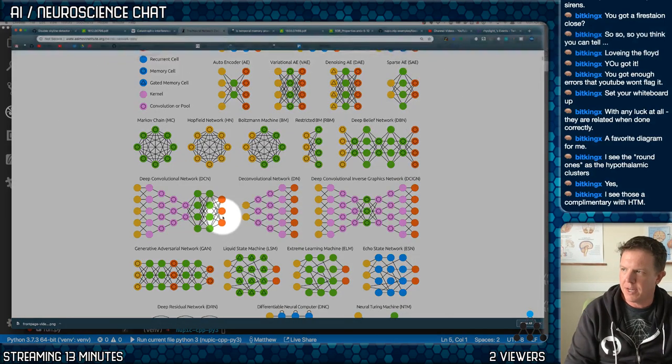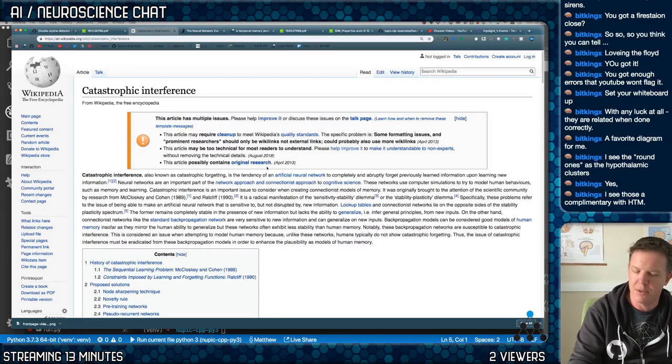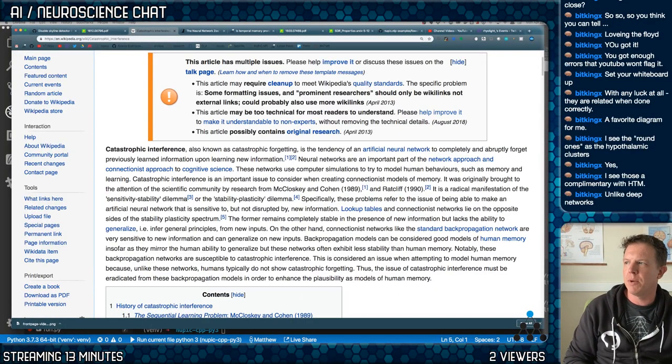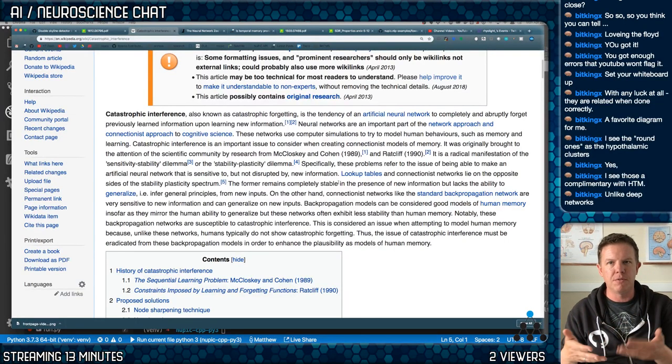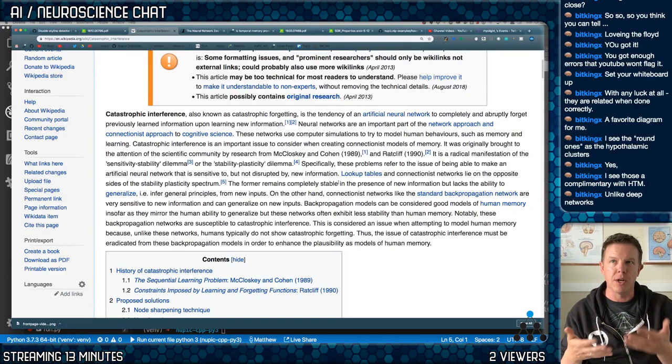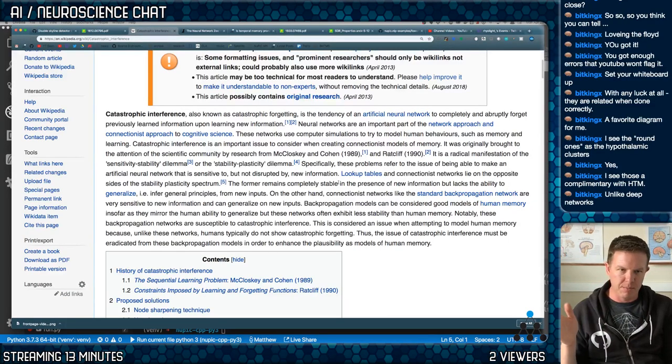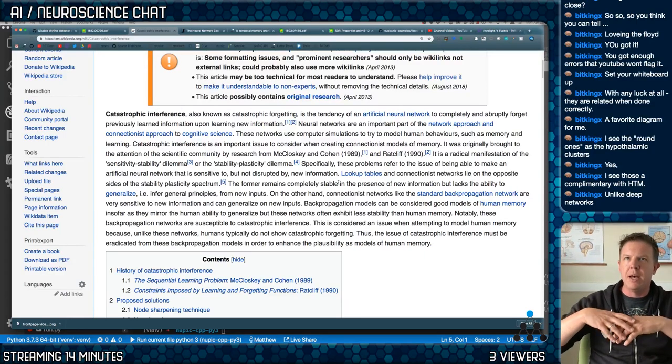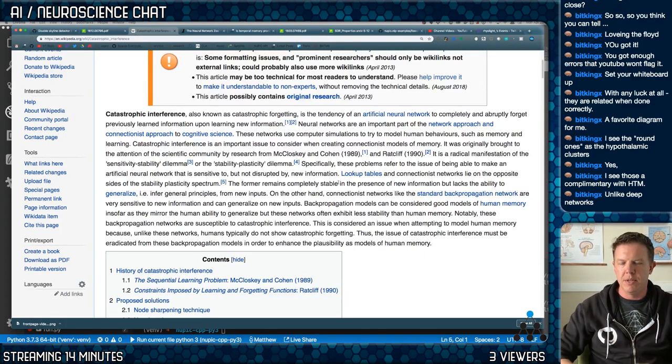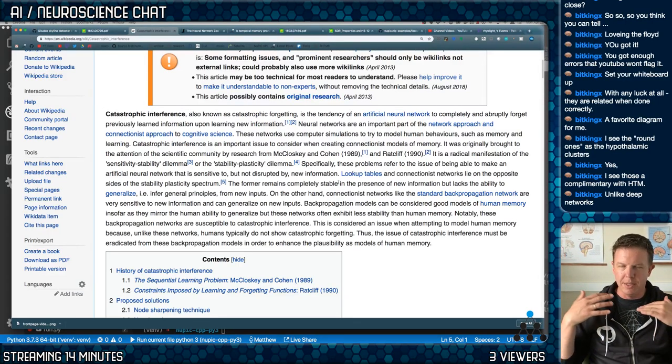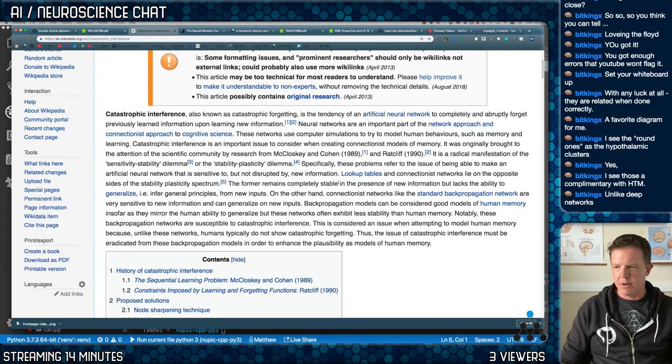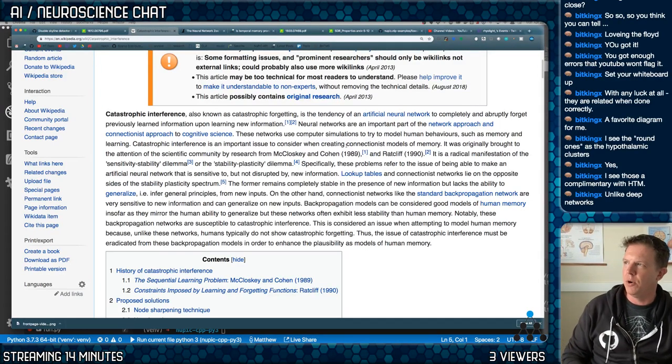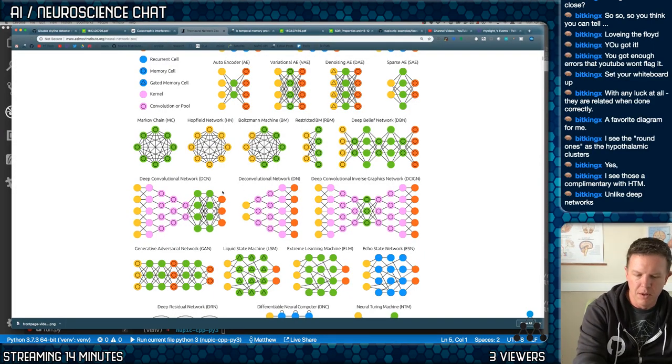So the problem with catastrophic forgetting is, let's look at the Wikipedia definition and then expand upon that. So it's a tendency of an ANN like this to completely and abruptly forget previously learned information upon learning new information. So we have to talk about learning, and in these networks we do learning by the back propagation, application of back propagation of error, and you do that in like batches, right? You'll basically average a bunch of stuff together and process them all at the same time, and then run back propagation of error across the whole structure and adjust the weights.